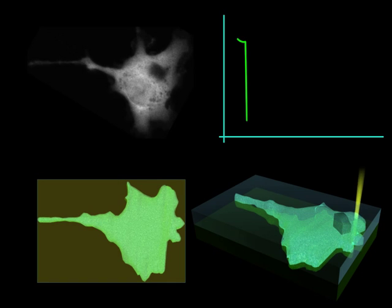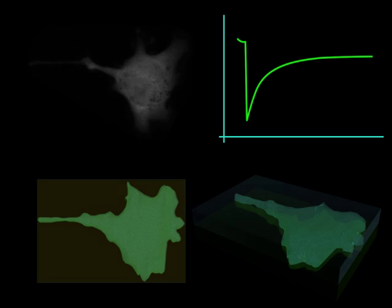Begin collecting images immediately after the bleach and collect enough points to get a good curve for the initial recovery. Collect for a long enough time that no additional changes in the fluorescence redistribution are observed.